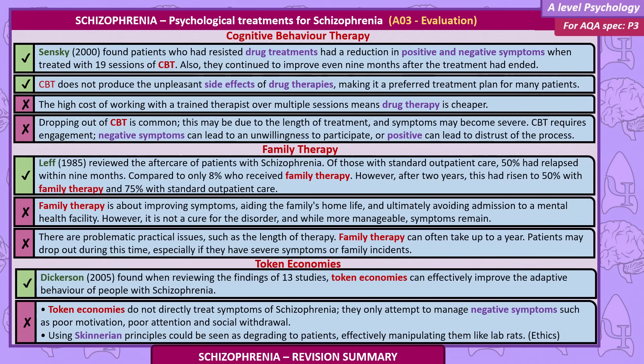Family therapy evaluation: Leff reviewed the aftercare of patients with schizophrenia. Of those with standard outpatient care, 50% had relapsed within 9 months, compared to only 8% who received family therapy. However, after 2 years this had risen to 50% with family therapy and 75% with standard outpatient care. Family therapy aims to improve symptoms, aid the family's home life and avoid admission into a mental health facility, but it is not a cure and symptoms remain. There are also problematic practical issues such as the length of therapy — family therapy can take up to a year — and patients may drop out due to severe symptoms or family incidents.